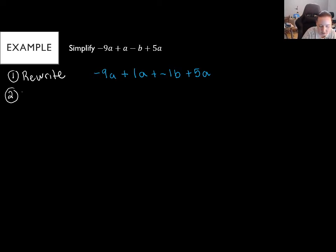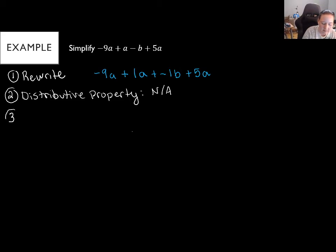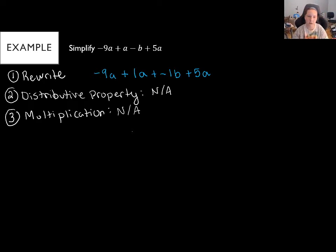Step two is the distributive property, which involves parentheses. We don't have any parentheses here, so this is not applicable. Step three is multiplication. Because we didn't distribute, we also have no multiplication — also not applicable. These two steps usually go together: if you have the distributive property, you'll have multiplication right after.